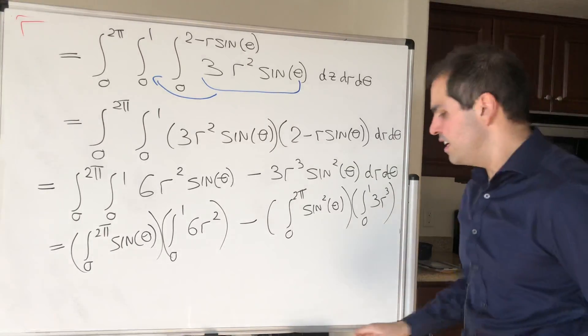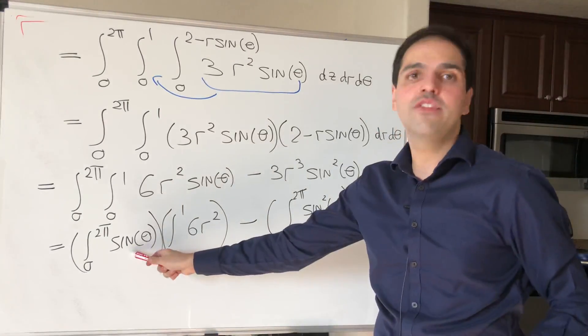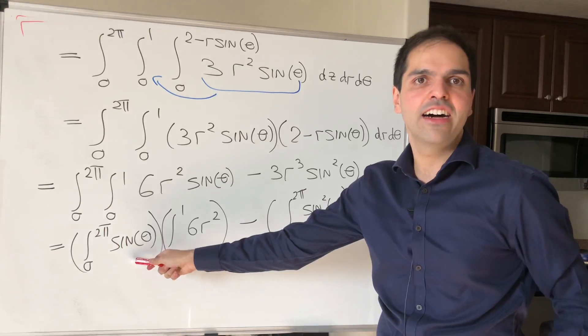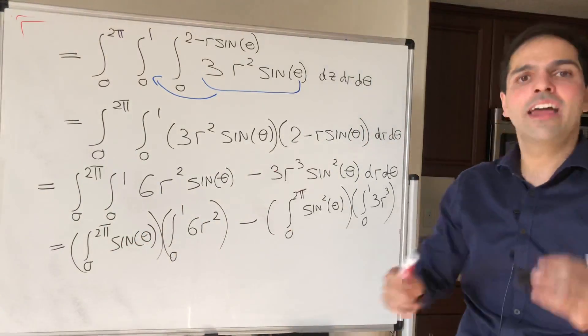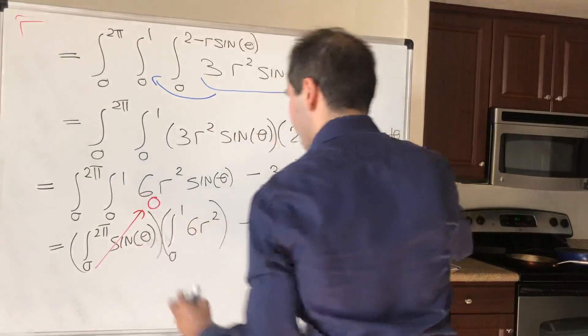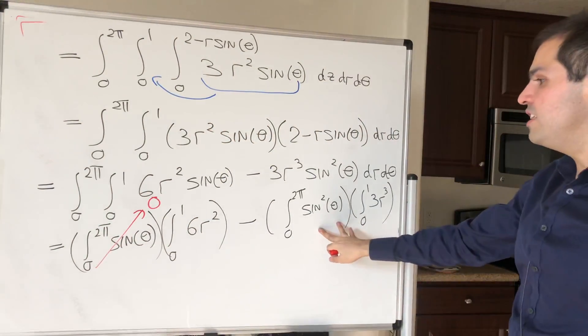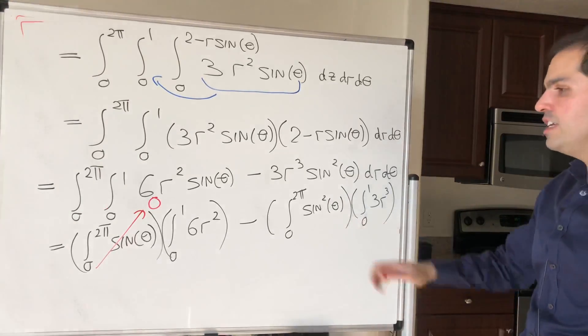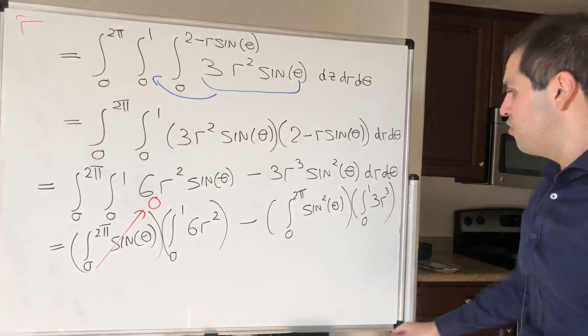Now the nice thing is, well the antiderivative is minus cosine of theta, and if you plug in at 0 and 2 pi, this cancels out, so it turns out this is 0. So all we really need to figure out is the integral of those two functions.